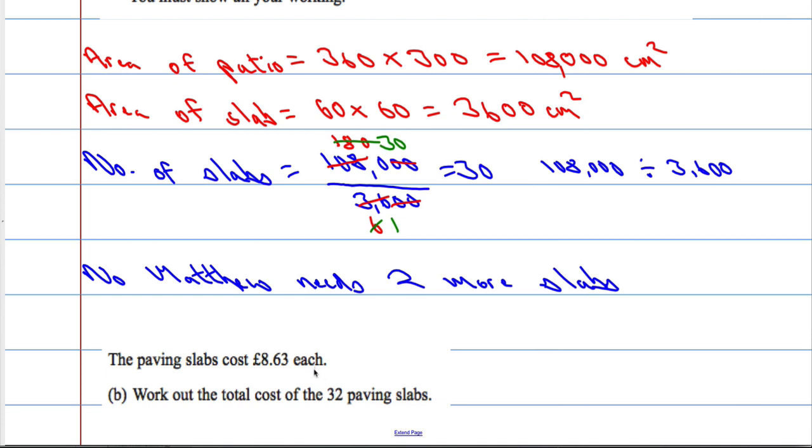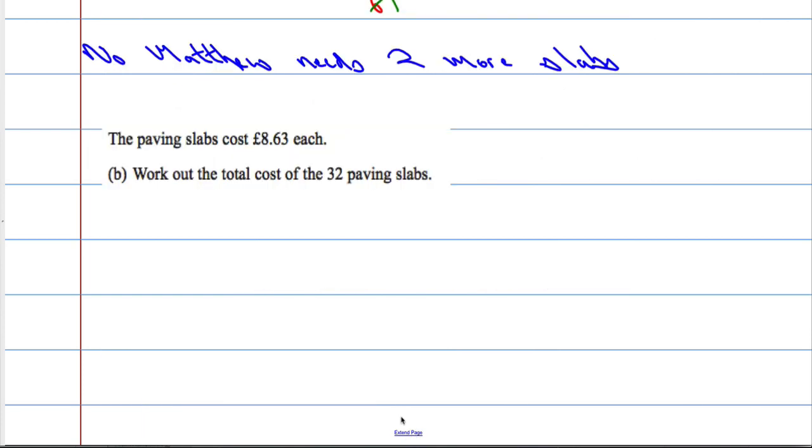Let's have a look at part B. The paving slabs cost £8.63 each. Work out the total cost of 32 paving slabs. So essentially what we're asked to do here is a bit of arithmetic: 8.63 times by 32. It's a long multiplication and we can't use the calculator, so we're going to have to choose our method. You could use the column, the grid, or the lattice. I'm a big fan of the lattice, so I'm going to work out 863 times by 32.